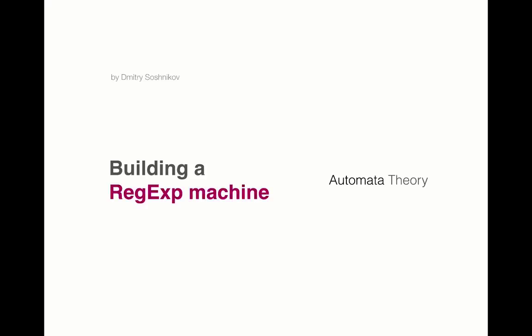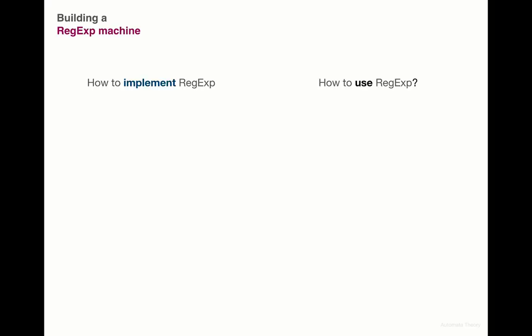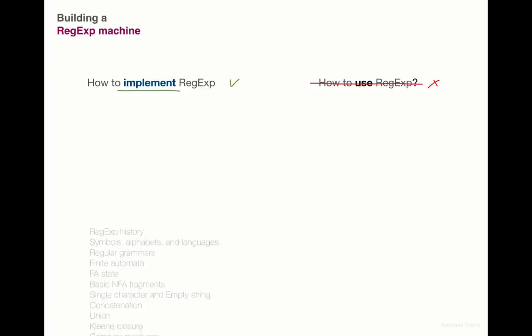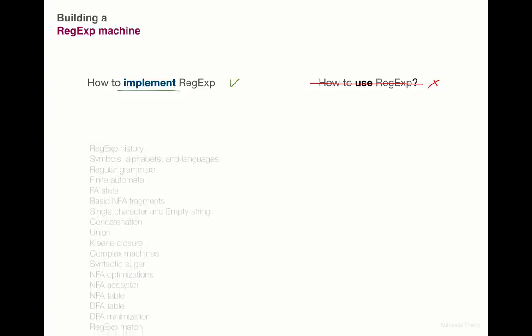Welcome to the first session of Automata Theory: Building a Regex Machine class, where we talk about state machines, formal grammars, and implement a regular expression processor based on finite automata. This class is not about how to use regular expressions — you should already know what a regular expression is and actively use it in practice. This class is rather about how to implement regular expressions, which is not a trivial task and requires a certain amount of computer science theory and applying different data structures and algorithms in practice.